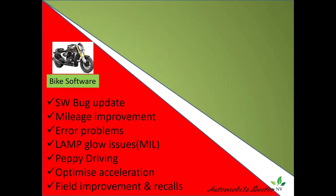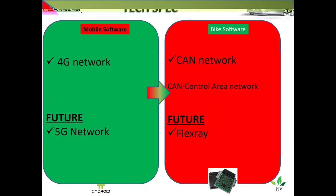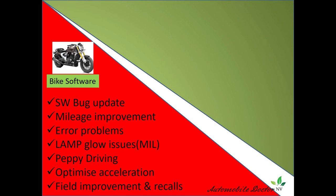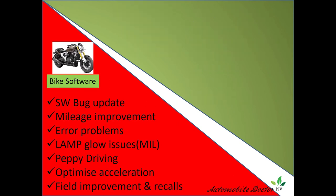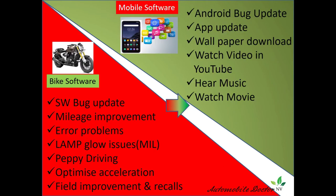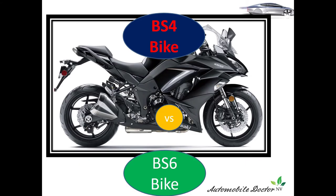Bike software also has bugs, because software will have bugs — even bike software will have a bug. For mileage improvement you have to update the software. Any problem that comes during development or from field data, they just clear it up. You might have seen some warning lamps glowing in vehicles; if a problem comes, sometimes that needs a software change. If you want to improve your bike day by day and refresh it, they just change the software based on market field improvements and feedback — similar to your mobile phone app updates.